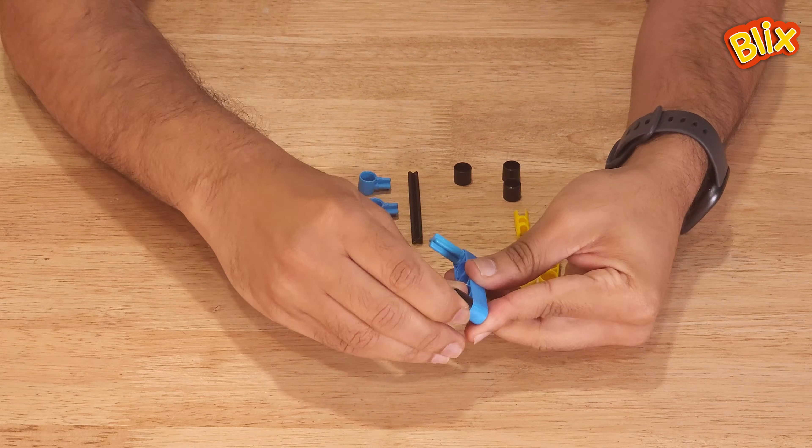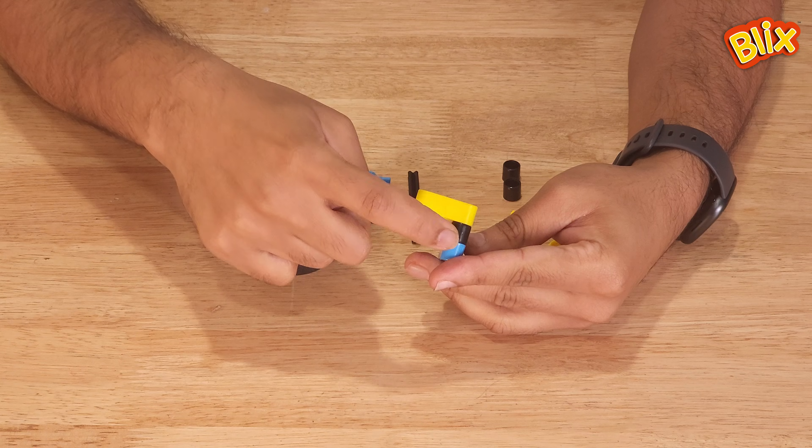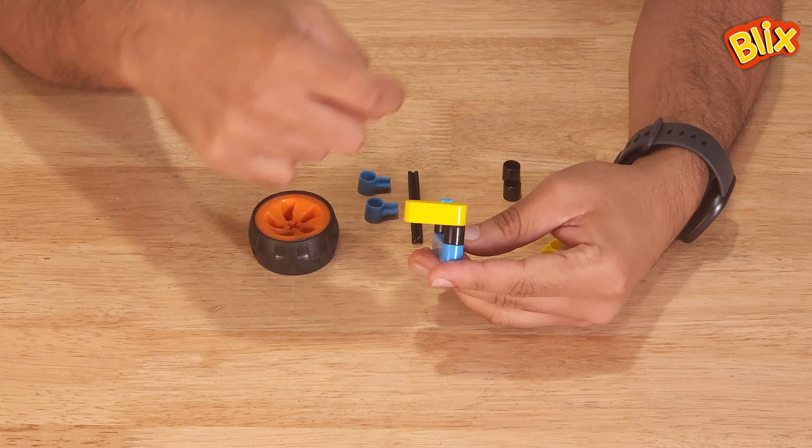Then, insert a TW1 like this. Take a P3, connect it like this so that P5 and P3 are at right angles.